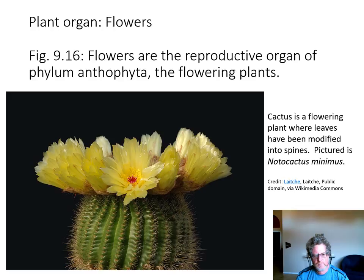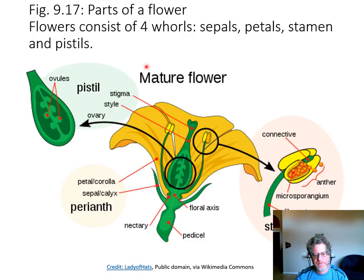Flowers are the sexually reproductive organ of the plant. Here's a cactus flower from a Notocactus minimus in bloom. Here's a diagram of a flower — you should know the four basic whorls. The outer green part is the sepal. Then everybody knows the petals are the colorful, smelly part. Going from outside to inside, the male part is the stamen — it has 'men' in it — and in the middle the female part is called the pistil.